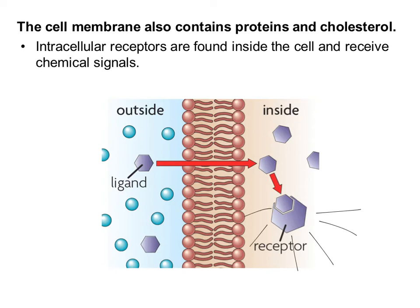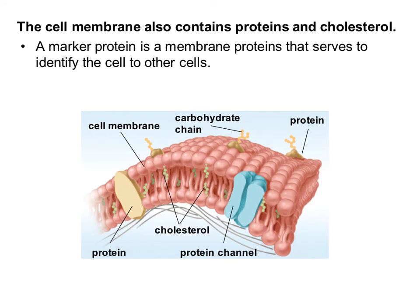This is actually how a lot of hormones work — they diffuse through our cell membranes and bind with receptor proteins on the inside of the cell to cause a response. Our last membrane protein is called a marker protein, and it serves to identify cells to other cells. This becomes especially important when talking about our immune system. Our immune cells constantly look at other cells to make sure they belong to us. If they encounter a cell that doesn't belong, like a harmful bacteria, the immune cell is going to want to kill that cell. You can think of marker proteins as being like an ID.